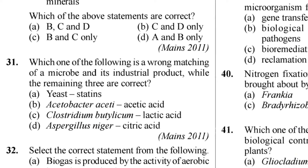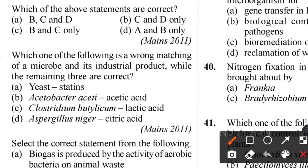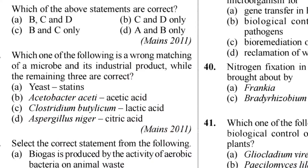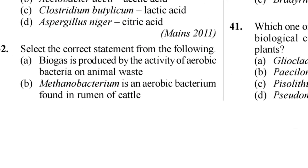Thirty-first question: which is the wrong match pair of a microbe and its industrial product? The answer is option C - Clostridium butylicum - lactic acid. Clostridium butylicum produces butyric acid, not lactic acid. The other three options are correct. So option C is the correct answer.